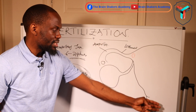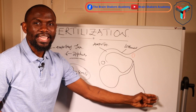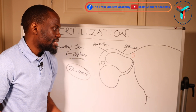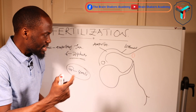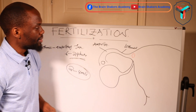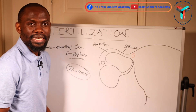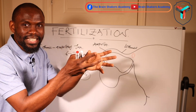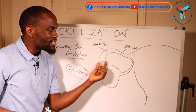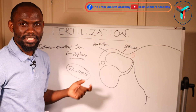Some spermatozoa manages to navigate through the thick mucus in the cervix under the effect of progesterone. The spermatozoa that has been deposited needs to be directed where to go, so the ovum itself produces what we call chemotactic elements — signals sent to the spermatozoa indicating the location of the ovum.